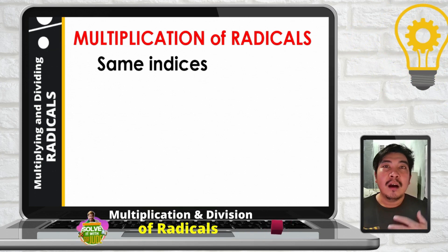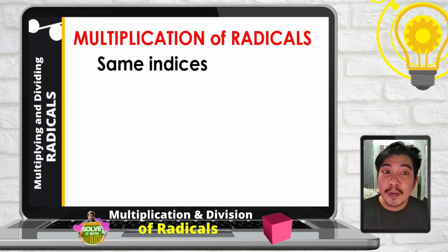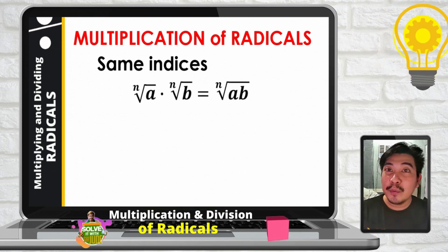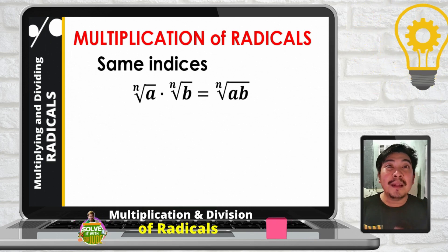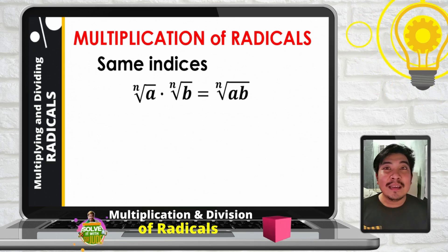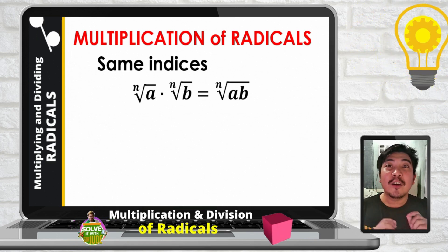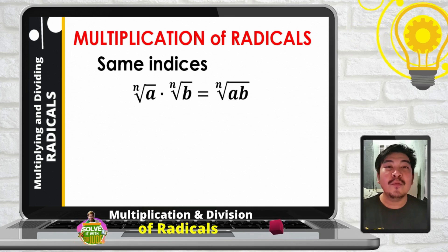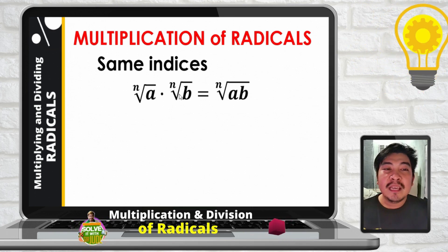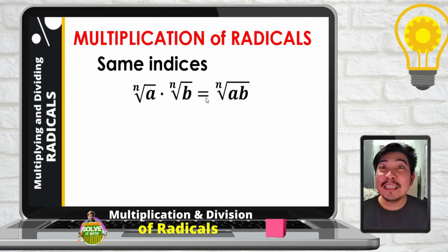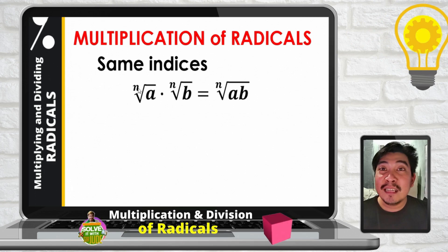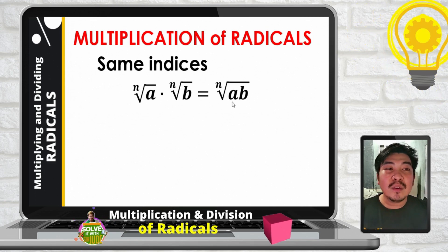When we are having radical expressions with the same indices, we will just need to apply the law of radical — specifically the product rule of radicals. We are given with the n-th root of a times the n-th root of b. Since they have the same index n, we can combine them as the n-th root of a times b.